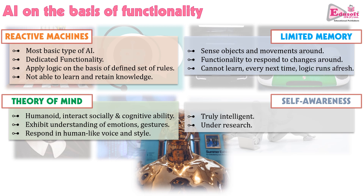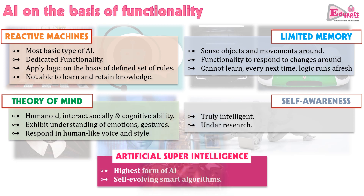Apart from these four types on the basis of functionality, there is a fifth type conceived as artificial super intelligence, which is a futuristic machine exhibiting the highest form of artificial intelligence. It has self-evolving, self-learning smart algorithms, and eventually this machine gets so intelligent that it can autonomously take over all the tasks and functionalities of the system. This is the highest form of artificial intelligence called artificial super intelligence. So these five types are on the basis of functionality.